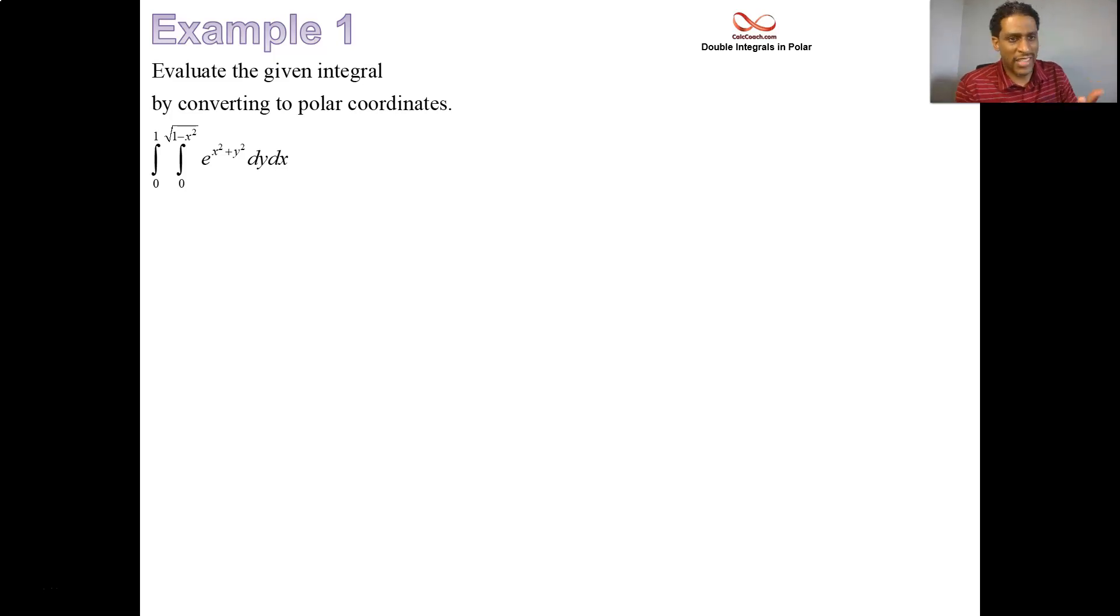The reason being, the integrand has x squared plus y squared. We saw the equations that convert us from x and y into polar and backwards. x squared plus y squared is equal to r squared. And also, it's the region that is circular in nature. The main thing is about the region being circular in nature.